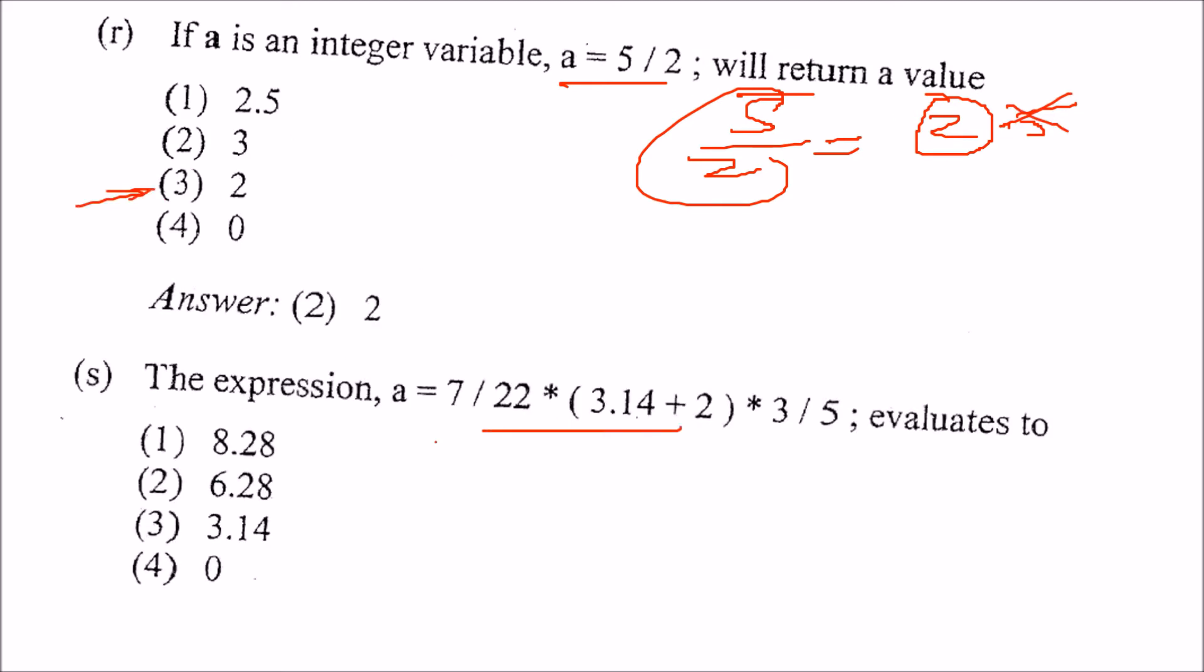The expression this evaluates 2. I hope that you will be able to solve this. This will be 0. Because 7 by 22, first of all, this will be computed. But, still we know that 7 by 22 is again 0. Because both are integer and you will get some 0.00. Here also 3 by 5, you will get some 0 point something. And you will get a 0.